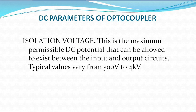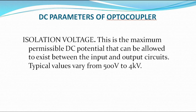DC parameters of optocoupler. The parameters of DC optocouplers are: first, isolation voltage. This is the maximum permissible DC potential that can be allowed to exist between the input and output circuit. Typically, the range is from 500 volts to 4000 volts — that is 4 kilovolts. That is the DC parameter of optocoupler.